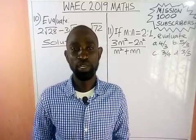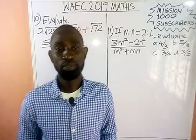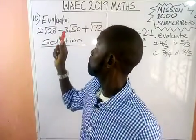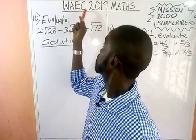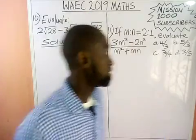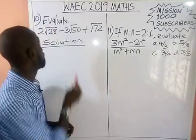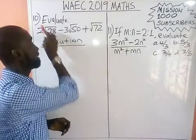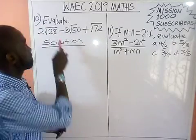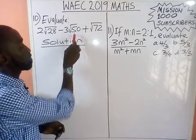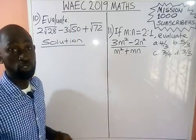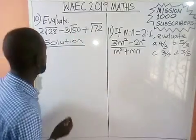Welcome back to my channel. In today's class we continue our solutions to WAEC 2019 math questions. We have two questions to be solved: question number 10 and question number 11. This first question is an aspect of mathematics that we call surds.